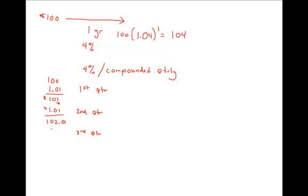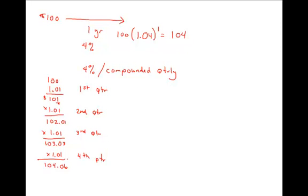The third quarter, I'm going to earn 1% again, but on $102.01. So multiply by 1 plus 1%, and I end up with $103.03 at the end of the third quarter. Then in the fourth quarter, I earn 1% again — that gives me $104.06. So compare this total with quarterly compounding to the total with annual compounding. Even though they both have the same rate, with quarterly compounding I end up with 6 more pennies.